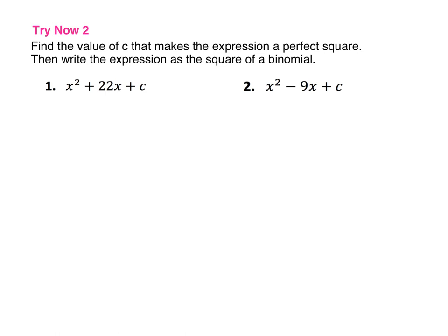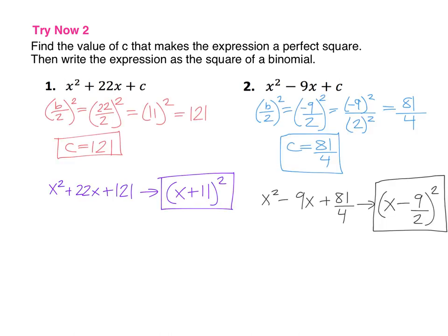Here are two try-now problems for you to try on your own. Please pause the video and give this a try. Here are your solutions. On number 1, b divided by 2 squared was 22 divided by 2, so 11 squared gives us c equal 121, and it factors to x plus 11 squared. Number 2 had a fraction for b over 2 — negative 9 divided by 2 doesn't divide evenly, so square the negative 9 and square the 2 to get c equal 81 over 4. Then the trinomial factors to x minus 9 over 2 quantity squared.